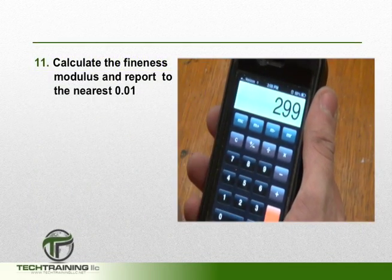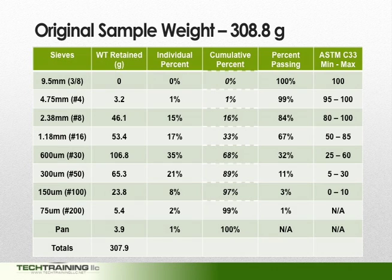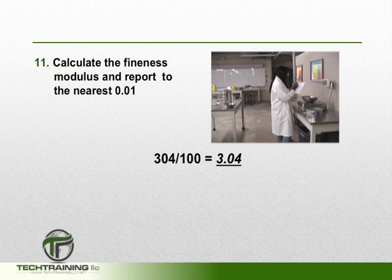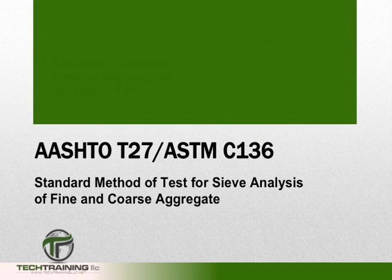We must now calculate the fineness modulus and report this number to the nearest 0.01. To calculate the fineness modulus, we want to add all the raw values of the cumulative percent retained column for material coarser than the 150 micron sieve, and divide this number by 100. Here, we wind up with a raw value of 304, and dividing by 100 gives us a fineness modulus of 3.04. For more information on calculating the fineness modulus of both fine and coarse aggregate, please visit the blackboard section of this program.